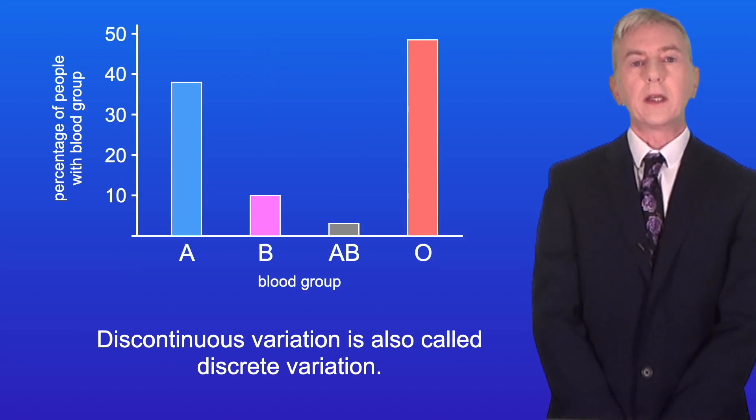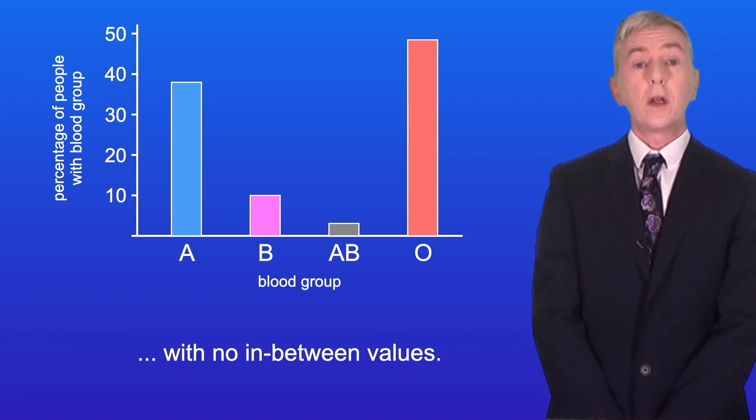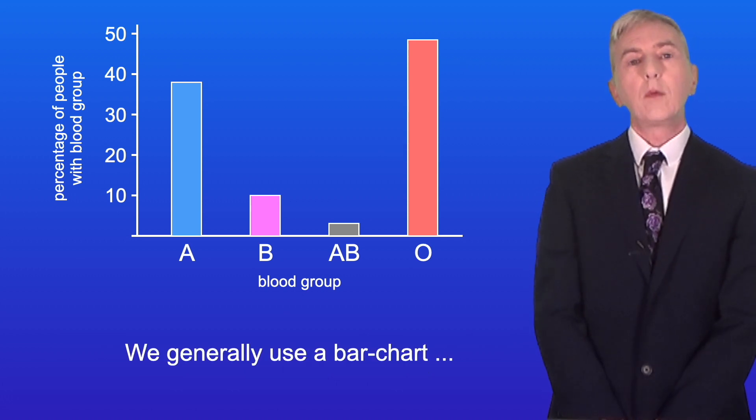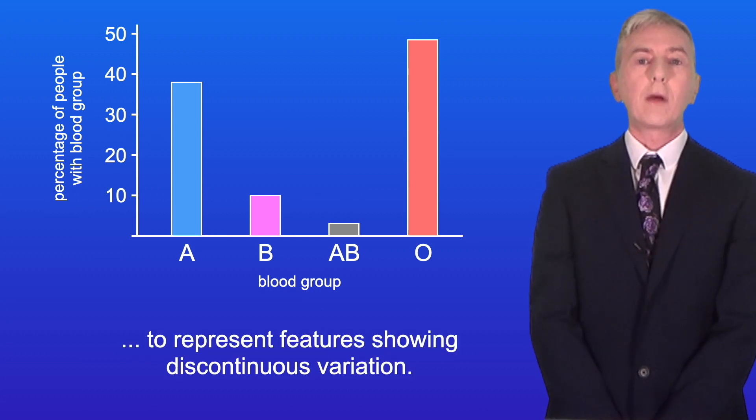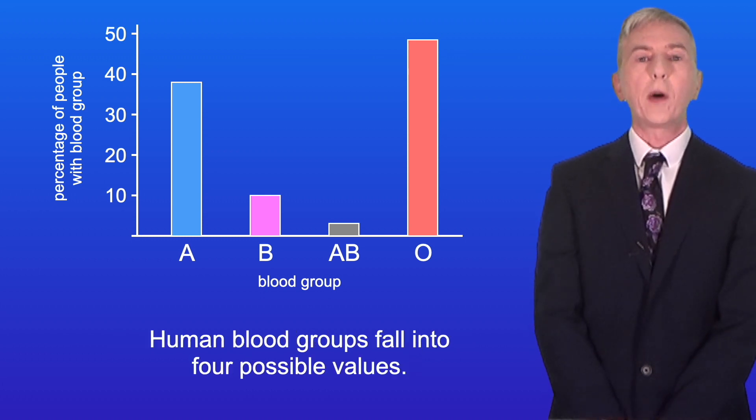Discontinuous variation is also called discrete variation. With discontinuous variation a feature can only have specific values with no in-between values, and we generally use a bar chart to represent features showing discontinuous variation. A good example is blood groups in humans.